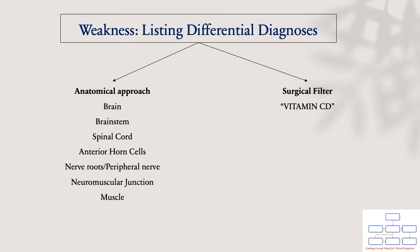Before we approach weakness, it would be good to have a list of differentials in your head before you explore any presentation. To do that, we can employ the anatomical approach, where we classify the differentials according to where the lesion lies anatomically, or using the surgical sieve. This will be explained in more detail.